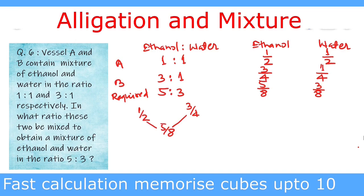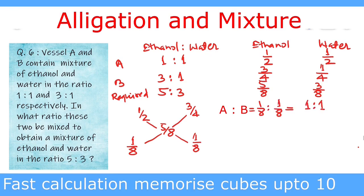Subtracting 5/8 from 3/4: since 3/4 = 6/8, we get 6/8 − 5/8 = 1/8. Similarly, 1/2 = 4/8, and 5/8 − 4/8 = 1/8. Thus the ratio for the final mixture is 1/8 : 1/8, which is simply 1:1. So when we mix the mixtures from vessel A and vessel B in a ratio of 1:1, we obtain the required ethanol to water ratio of 5:3.